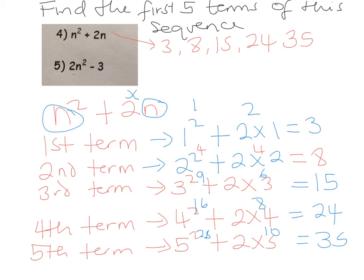4 squared is 16, double 16 is 32, 32 take away 3 is 29. And the final one, 5 squared is 25, double 25 which is 50, take away 3 which is 47.